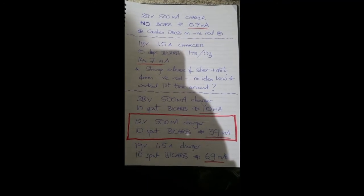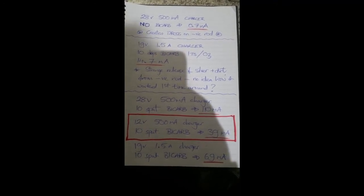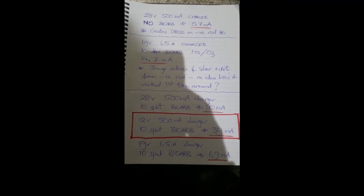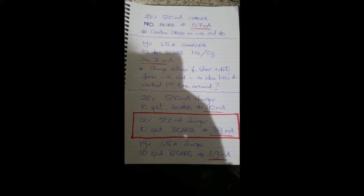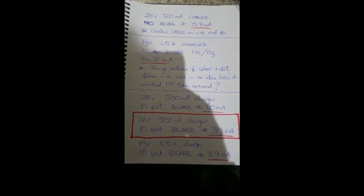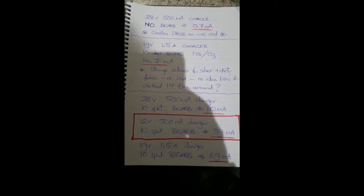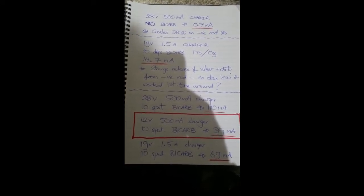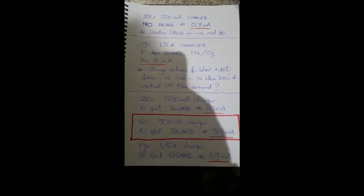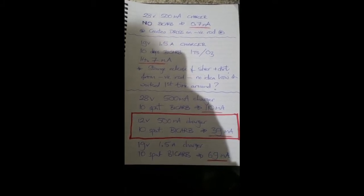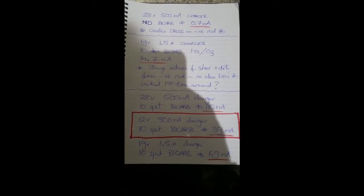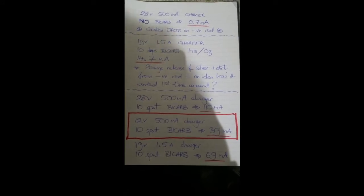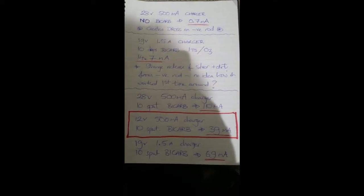Starting at the top of my little list here, this is using a 28 volt charger with 500 milliamps direct current using no sodium bicarbonate, which generates a current of 0.7 milliamps. I put a little note that it creates dross on the negative rod, especially when it's left for many hours. It's just a cake of dirt that seems to build up on the negative rod.